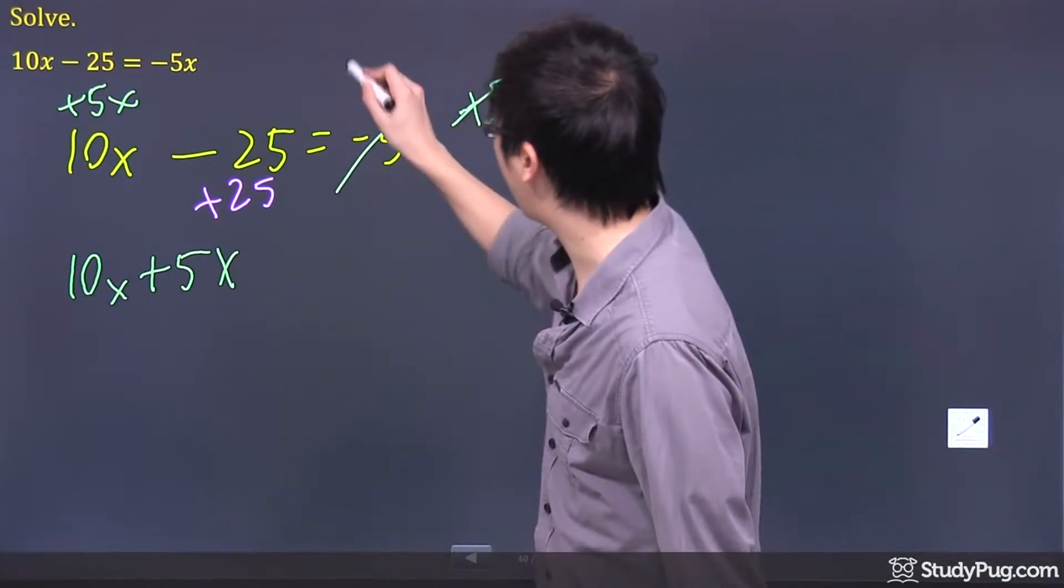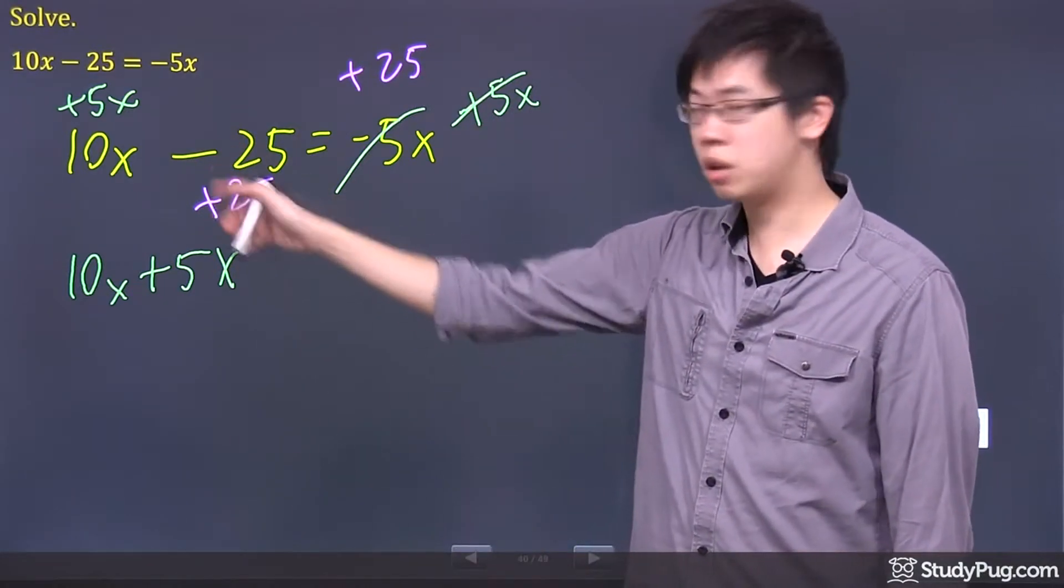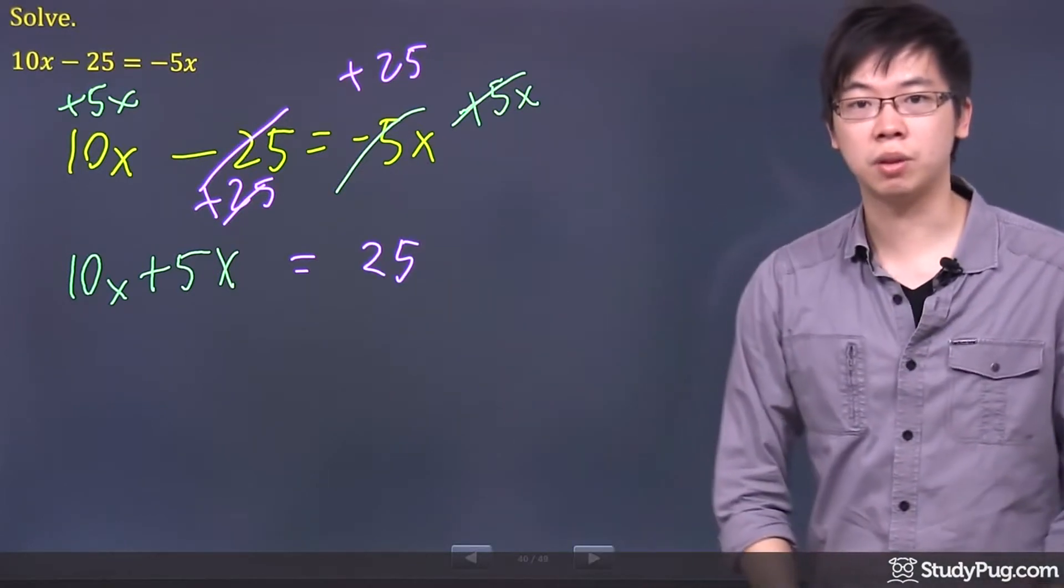Why not add 25 to both sides? If you add 25 to this guy right here, that gets cancelled. It's equal to the 25 on the right-hand side.